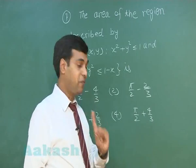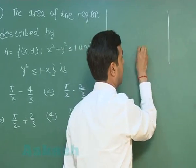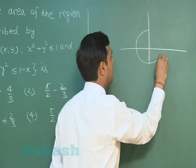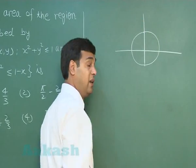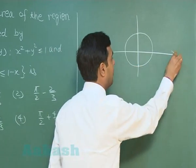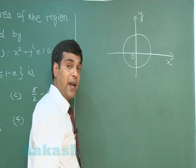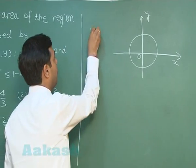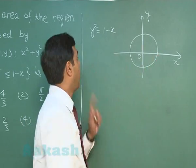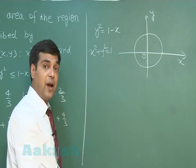Let us draw the two curves first. Drawing the circle with radius 1 and the parabola opening towards the left-hand side. The vertex of the parabola y² = 1 - x is clearly (1, 0). We now solve it with the circle x² + y² = 1.